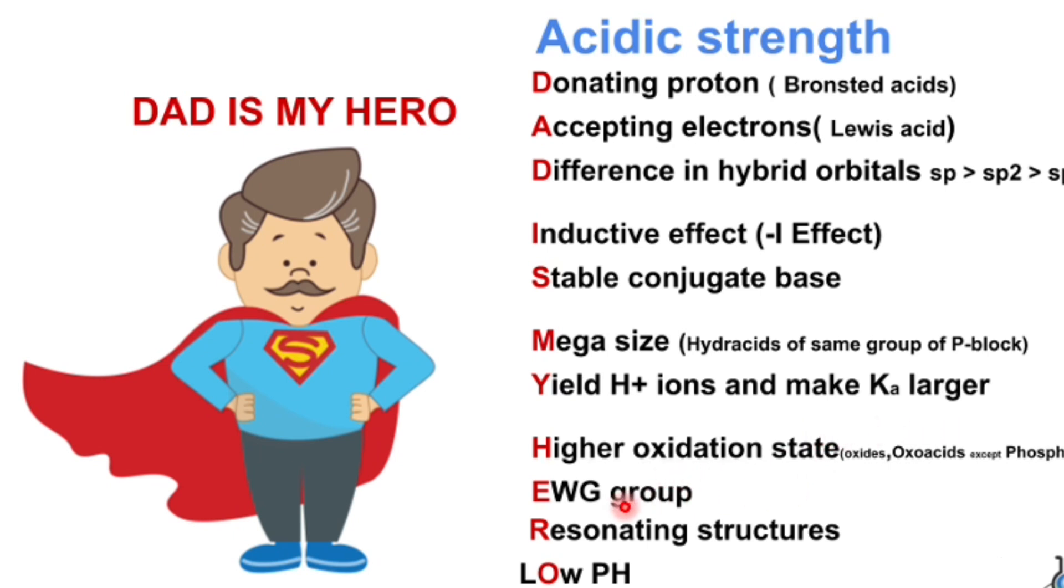H is higher oxidation state. E is EWG group, that means electron withdrawing group. R is resonating structures. O is low pH.